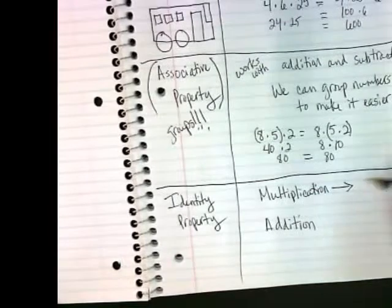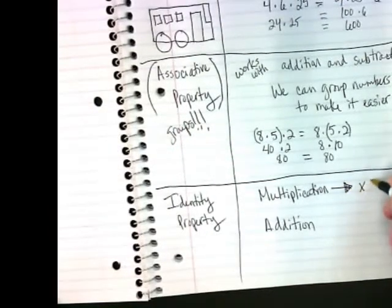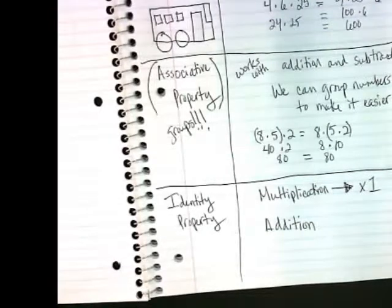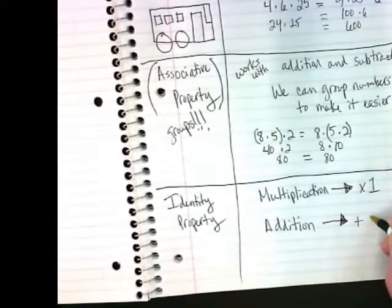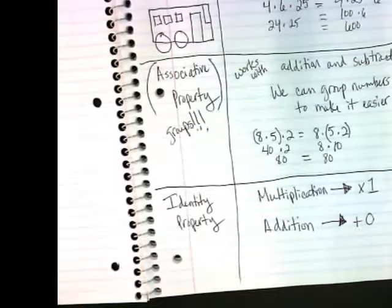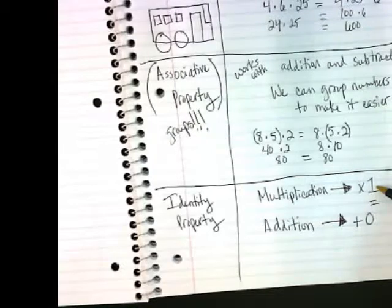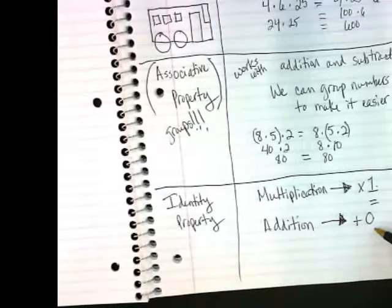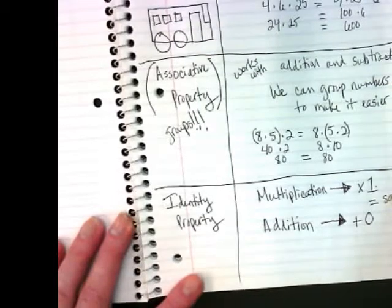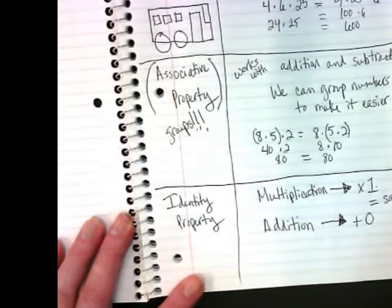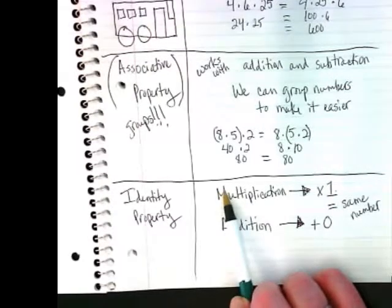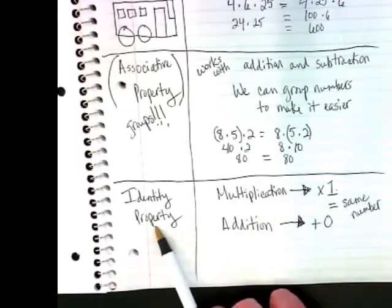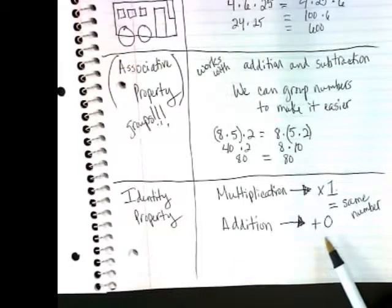With multiplication, when we multiply by 1, we're using the identity property. What happens if I multiply by 1? I get the same answer, right? What happens when I add 0? Same answer. So both of these give us the same number, and we refer to them when we're talking about them in a fancy way. The identity property of multiplication is when I multiply by 1. The identity property of addition is when I add 0.